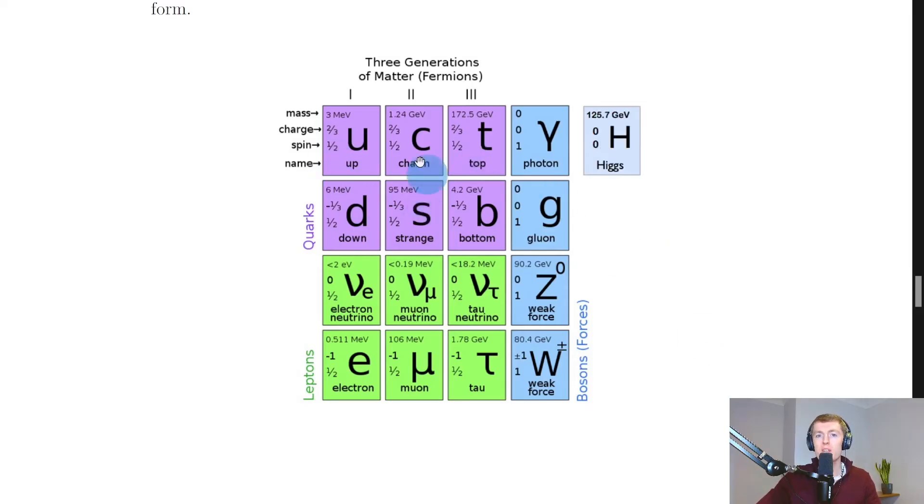So our complete standard model here consists of quarks and leptons which are matter particles, i.e. fermions, and then we've got bosons here on the right hand side.